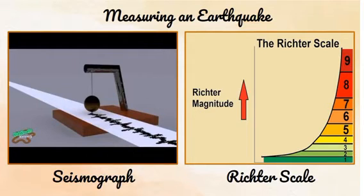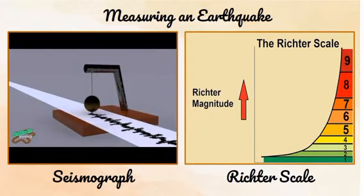The intensity of an earthquake can be determined using the Richter scale. The lowest value of 1 indicates a quake that is almost not felt, and a value of 8 or higher indicates a massive earthquake.